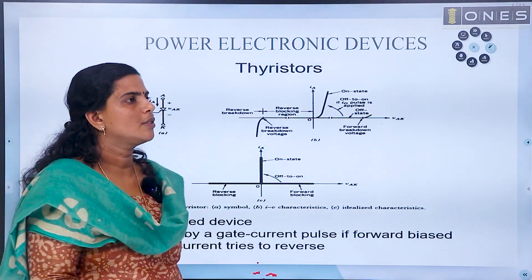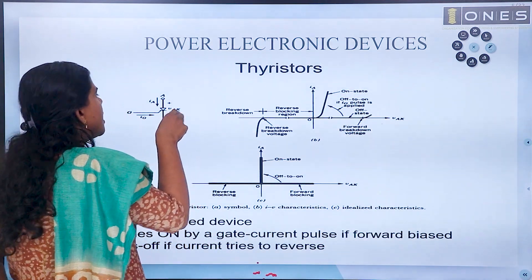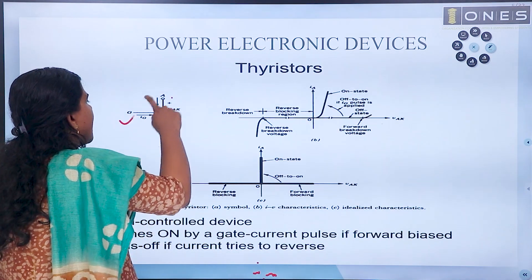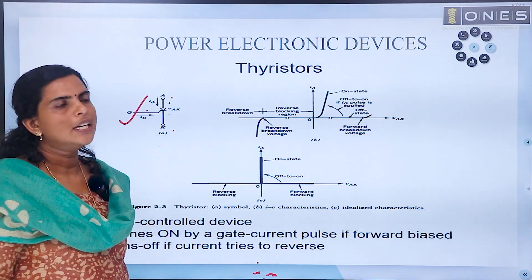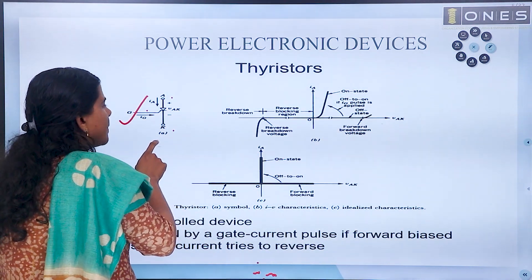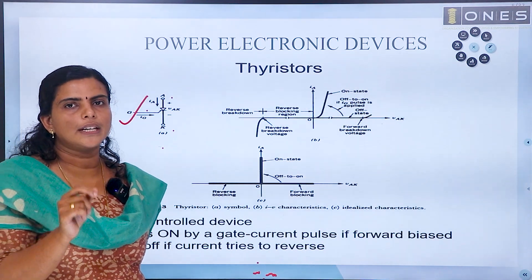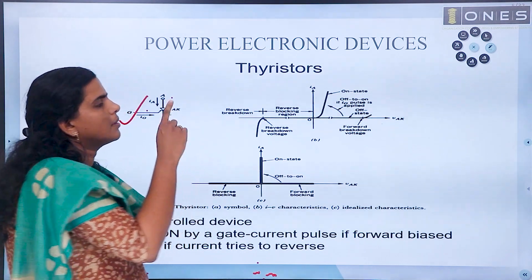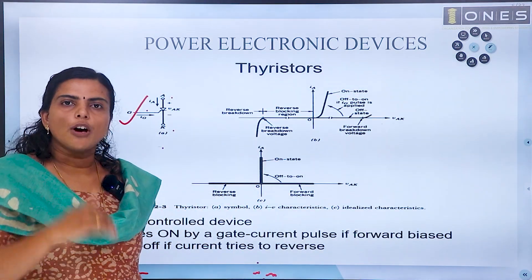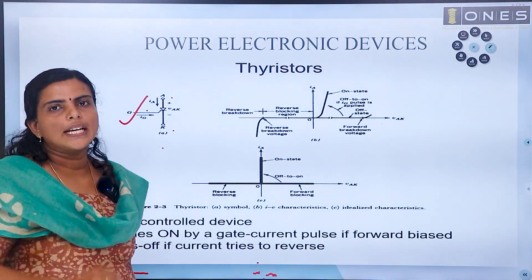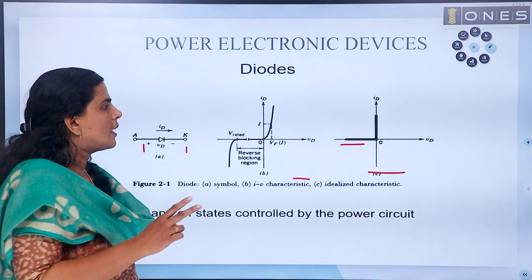Next is the thyristor, which is very commonly used in industries. The thyristor is a three-terminal, four-layer device with anode, cathode, and a gate. It is controlled with the help of gate current, making it a current control device. The current should reach at least the latching current value to turn on. To turn off the thyristor, we bring the anode current to a value lower than the holding current, or we apply a reverse voltage across the anode-cathode terminal.